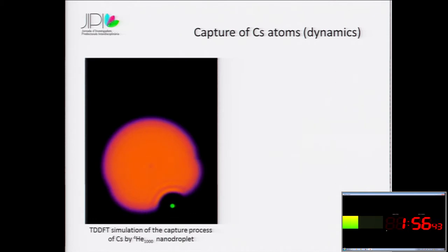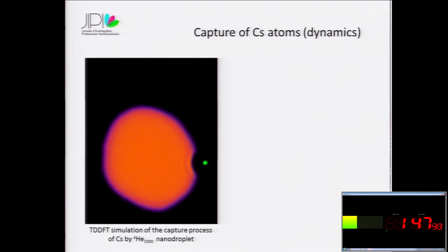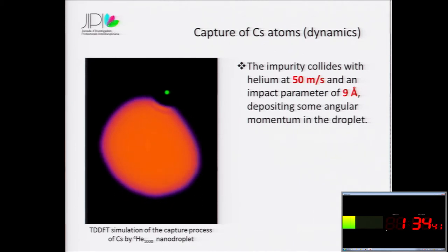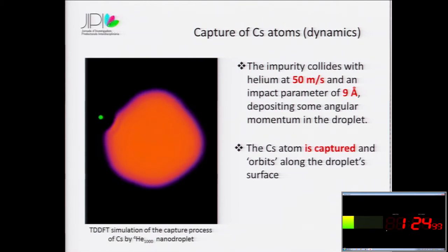We have made some simulations within density functional theory framework when we may collide a caesium impurity with a helium droplet. In this case, the impurity collides with helium at 15 meters per second and with an impact parameter of 9 angstrom, and deposits some angular momentum in the droplet. We can see how the caesium atom is captured and orbits along the droplet surface.